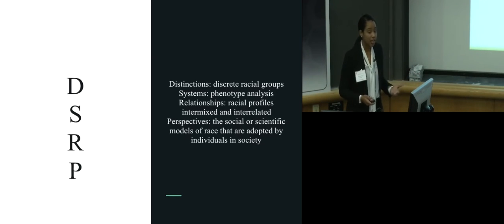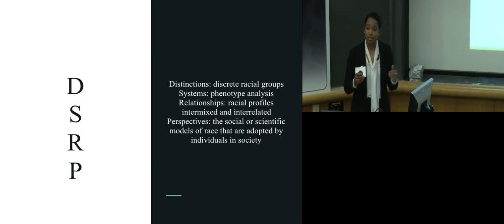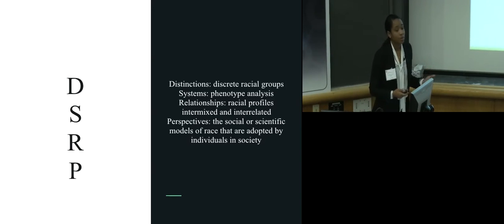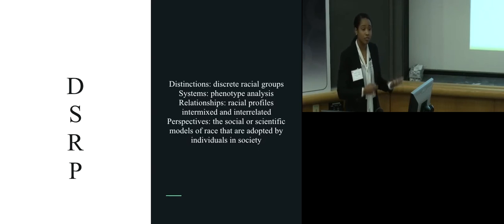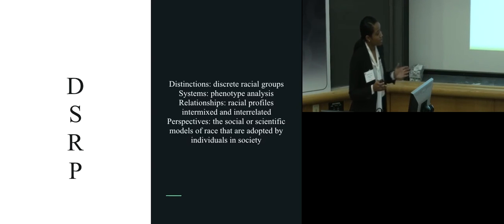As we saw in our sorting activities, distinction embodies an identity-other mentality whereby when we ascribe something an identity we are therefore saying it is not these other things. Systems pertains to the way in which things can be broken down into parts or lumped into wholes, and I would argue that our phenotype analysis of individuals in our daily interaction occurs in part-whole systems. Relationships are the ways in which ideas or things relate to one another. Throughout my presentation I will demonstrate how racial profiles have evolved over time, how they are interrelated and mixed throughout time. Perspectives is the way in which something can be evaluated from a point or a view, and I will argue that there are various perspectives that one can take on race.